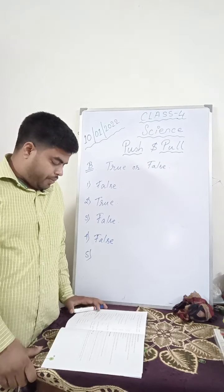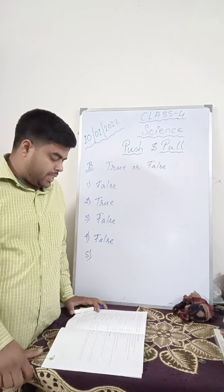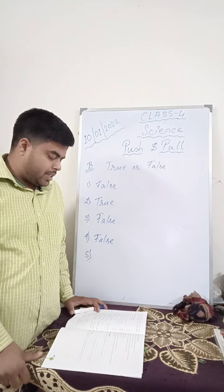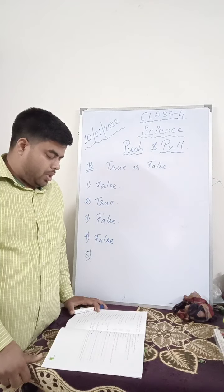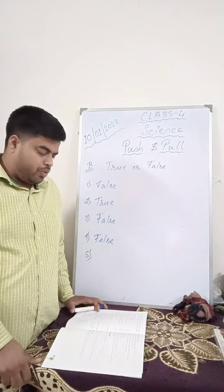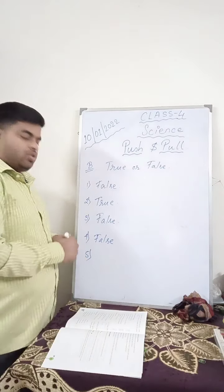Number 5. Friction always acts in the direction opposite to the direction of the moving object. True.